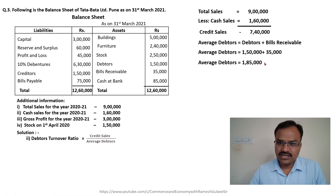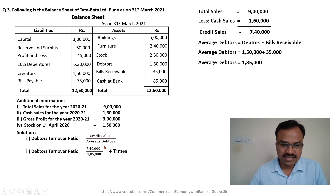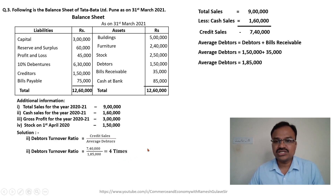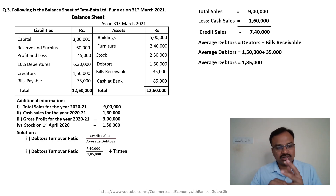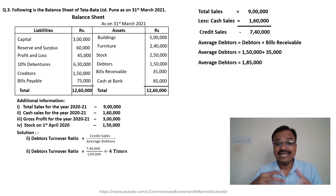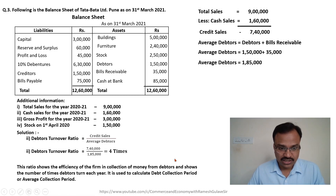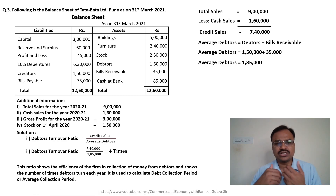Now we have credit sales and average debtors, so we can put these amounts into the formula. Debtors turnover ratio equals credit sales 7 lakh 40,000 divided by average debtors 1 lakh 85,000, giving us debtors turnover ratio of four times. As we already discussed, stock turnover ratio, debtors turnover ratio, and creditors turnover ratio are activity ratios, expressed in times.